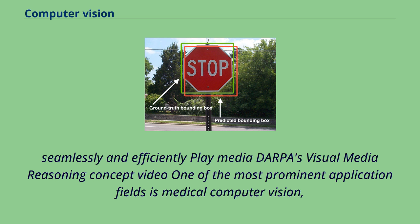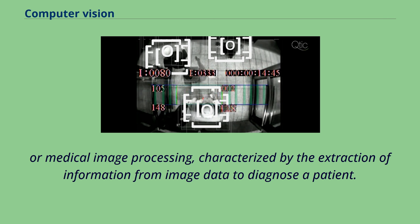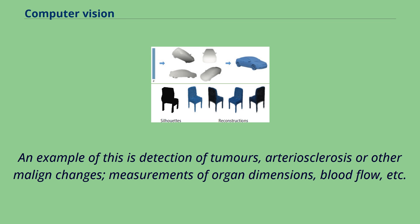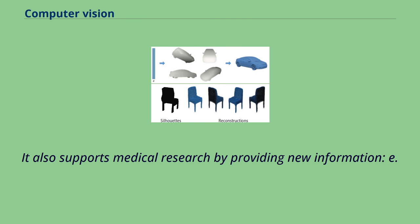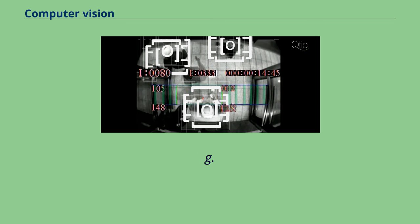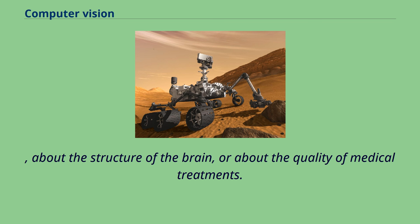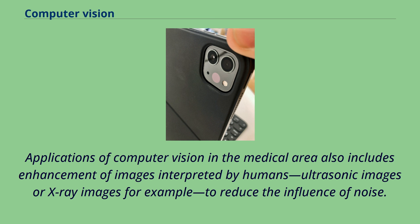One of the most prominent application fields is medical computer vision, or medical image processing, characterized by the extraction of information from image data to diagnose a patient. An example of this is detection of tumors, arteriosclerosis or other malign changes, and measurements of organ dimensions, blood flow, etc. It also supports medical research by providing new information about the structure of the brain or about the quality of medical treatments. Applications also include enhancement of images interpreted by humans, such as ultrasonic images or x-ray images, to reduce the influence of noise.